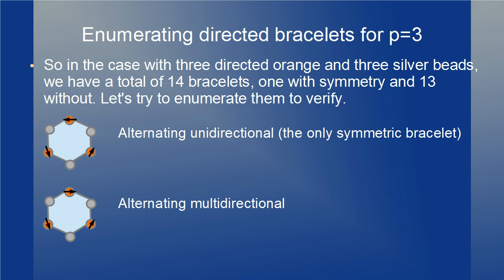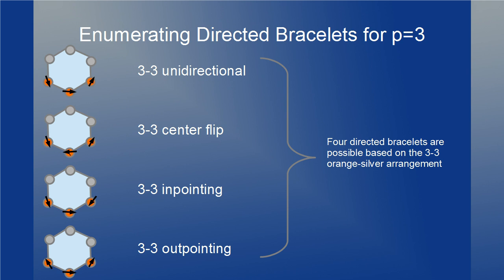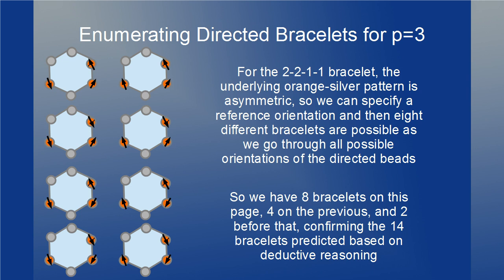In the case with 3 directed orange and 3 silver beads, we have a total of 14 bracelets possible — 1 with symmetry and 13 without. Let's enumerate them to verify. For the alternating underlying pattern we have the alternating unidirectional bracelet (the only one with any symmetry) and an alternating multidirectional bracelet. For the 3-3 split pattern, we have a unidirectional version, a center-flip version, an in-pointing arrangement, and an out-pointing arrangement. For the asymmetric 2-2-1-1 bracelet, we can specify a reference orientation and then 8 different bracelets are possible as we go through all possible directions of the orange beads (2×2×2). Totaling: 8 bracelets on one page, 4 on the previous, and 2 before that — confirming 14 bracelets.